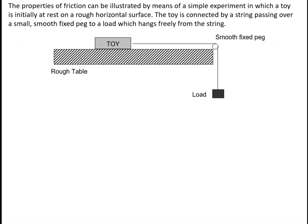The properties of friction can be illustrated by means of a simple thought experiment, in which we consider a toy that is initially at rest on a rough horizontal surface. The toy is connected by a string passing over a small, smooth, fixed peg to a load which hangs freely from the string.